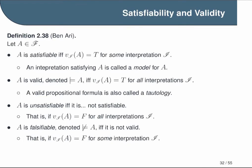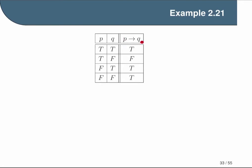That is all of the terminology we're going to introduce. Conceptually these are not very complicated, but all new terms take some getting used to. To help, we'll now look at some simple examples taken from Ben Ari's text. First, consider the basic formula p implies q. We want to run through the new terms and see which ones apply. So is p implies q a satisfiable formula? If you understand the definition of satisfiability, this is trivial to answer — you may want to pause and make sure you can answer it.